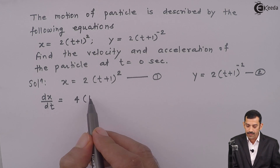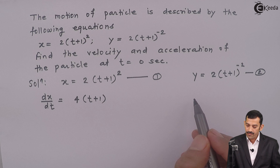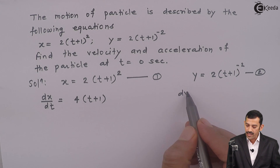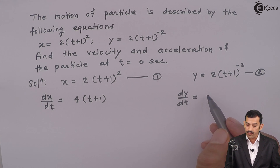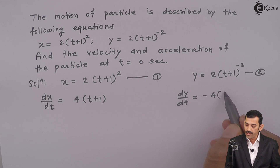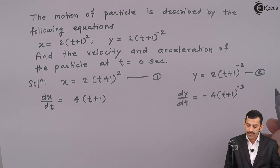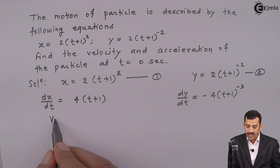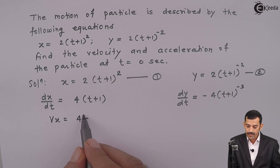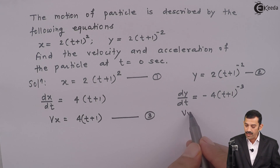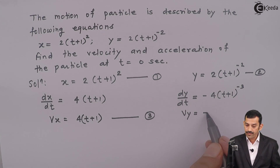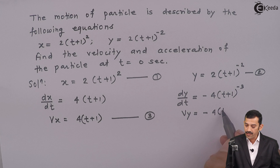So dx by dt gives 4(t + 1). And if we differentiate y with respect to time t, dy by dt becomes 2 into minus 2, which means minus 4(t + 1) raised to minus 3. Therefore, vx = 4(t + 1) — equation number 3. And vy = minus 4(t + 1) raised to minus 3 — equation number 4.